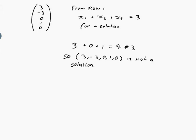So (3, -3, 0, 1, 0) is not a solution. And the reason it's not a solution is because it doesn't satisfy the equations.